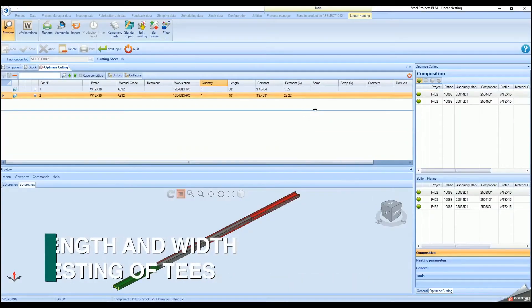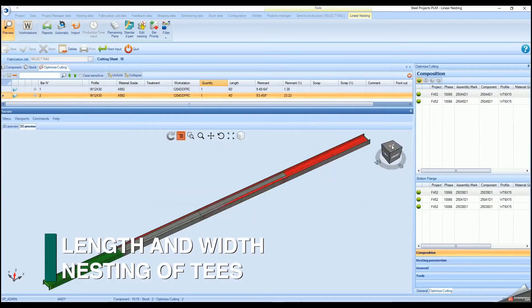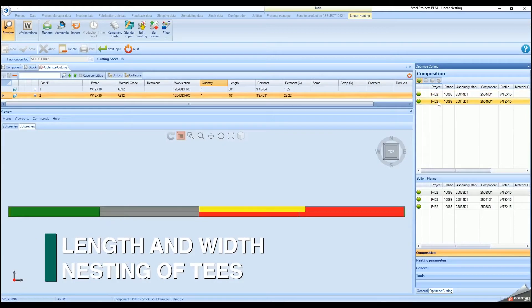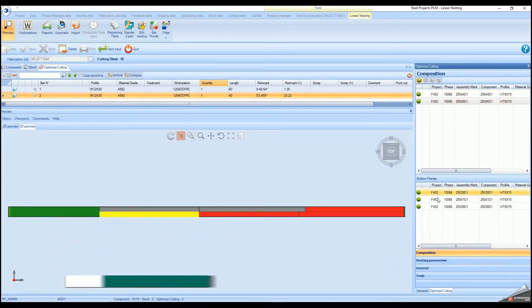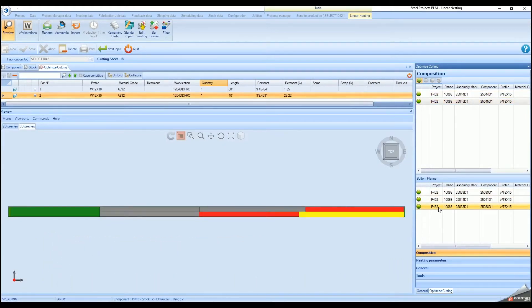The system's nesting software optimizes the nesting of tees in both the length and width for processing on the RAZ, all with industry-leading material savings.